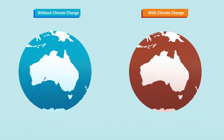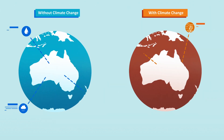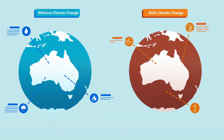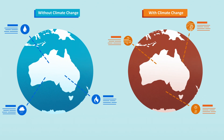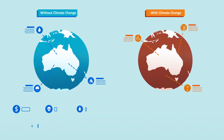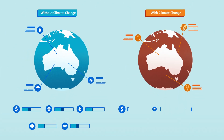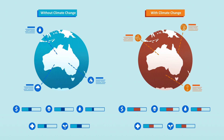We can calculate the role climate change played in a natural disaster by scientifically modelling worlds with and without it. We can also estimate how much extra damage and loss it caused.